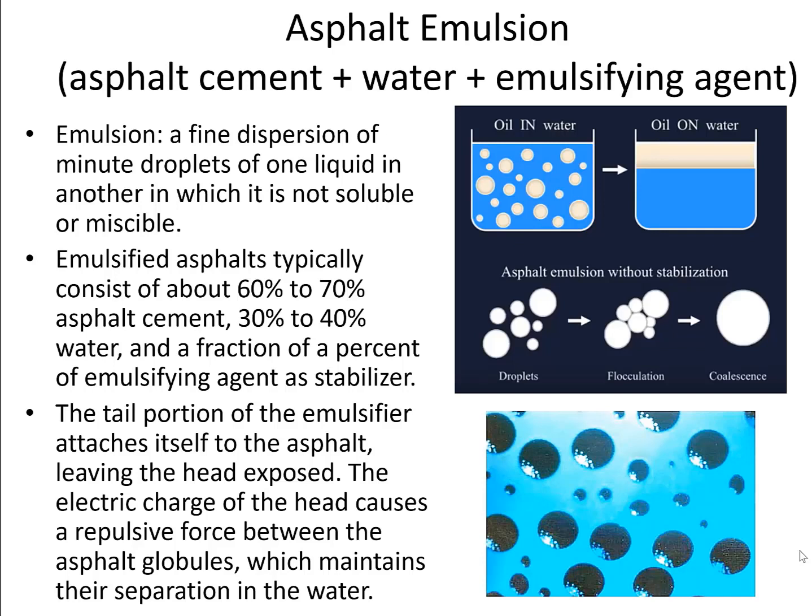An alternative to dissolving the asphalt in a solvent is dispersing the asphalt in water as emulsions. An emulsion is a dispersion of one liquid in another liquid where the two stay separate, usually with droplets of one liquid in the continuous phase of the other liquid. This can be an oil-in-water emulsion with droplets of oil in a water continuous phase, or a water-in-oil emulsion with droplets of water in an oil continuous phase.